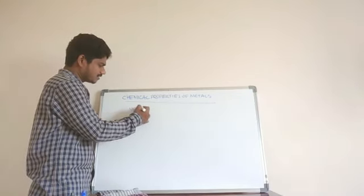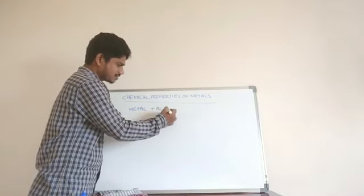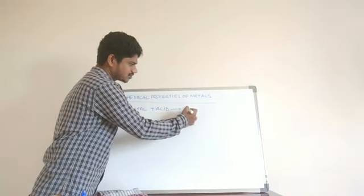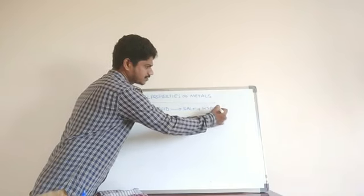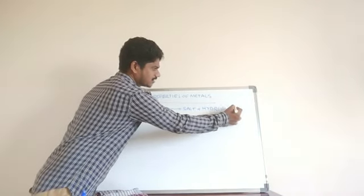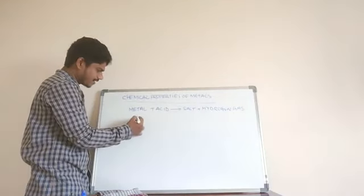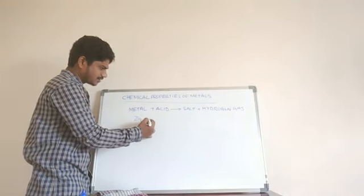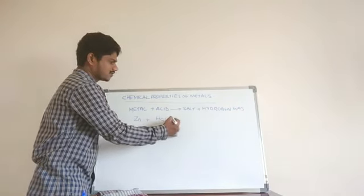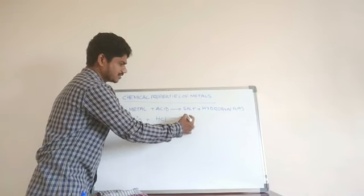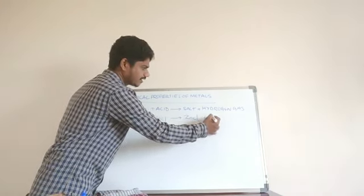When metals react with any acids, they are going to produce salt as well as hydrogen gas. We have seen this in the previous chapter on acids and salts. Take for example zinc — when it reacts with hydrochloric acid, it is going to produce zinc chloride (ZnCl₂) and hydrogen gas.